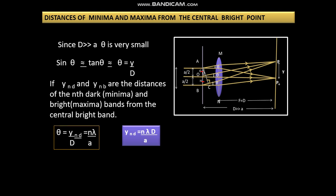then theta is y_n upon D that is equal to n lambda by a. So y_nd is equal to n lambda capital D upon a. So y_nd is equal to n times W.